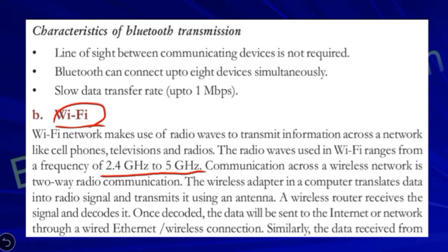We use Wi-Fi on phones, laptops, and other devices. Wi-Fi uses radio waves and radio signals — radio frequencies are used to transmit information across a network. There are many Wi-Fi versions and standards, including Wi-Fi N, Wi-Fi A, and Wi-Fi B, each using radio waves at different frequencies.